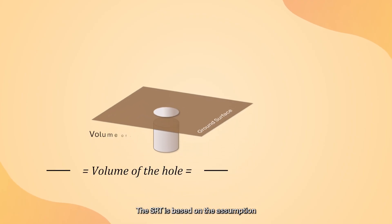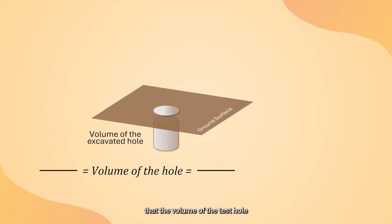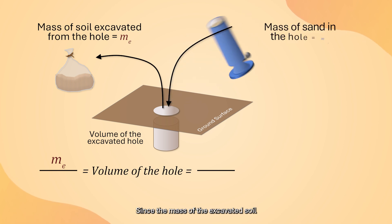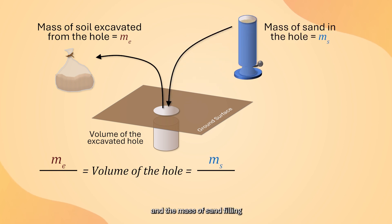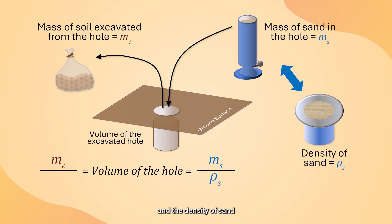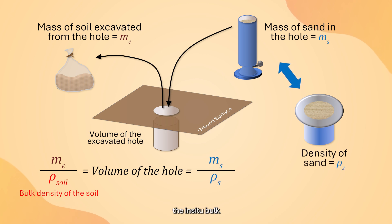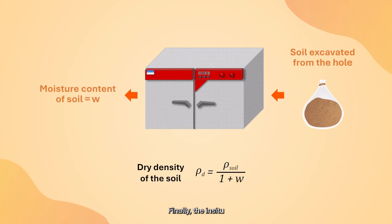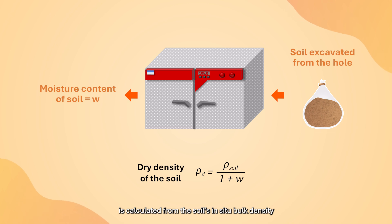The SRT is based on the assumption that the volume of the test hole remains constant during the test. Since the mass of the excavated soil and the mass of sand filling the hole are known, and the density of sand has been determined from laboratory calibration, the in-situ bulk density of the soil can be calculated. Finally, the in-situ dry density of the soil is calculated from the soil's in-situ bulk density and moisture content.